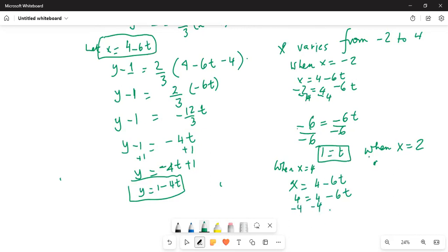So we have 0 equal to -6t, or t is equal to 0. So t is equal to 0.